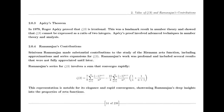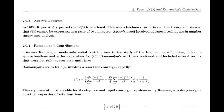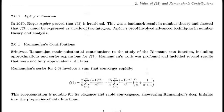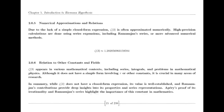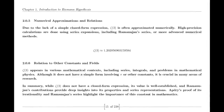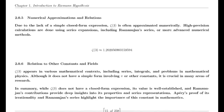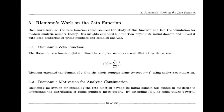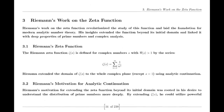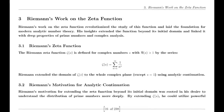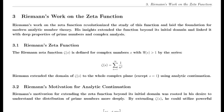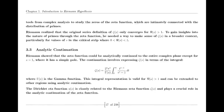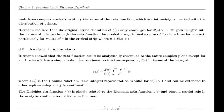Riemann's Hypothesis. Riemann proposed that all non-trivial zeros of the zeta function lie on the critical line where the real part of s is one-half. This hypothesis has profound implications for number theory, particularly in understanding the distribution of prime numbers. Despite extensive numerical evidence supporting the hypothesis, a formal proof or disproof remains one of the greatest challenges in mathematics.